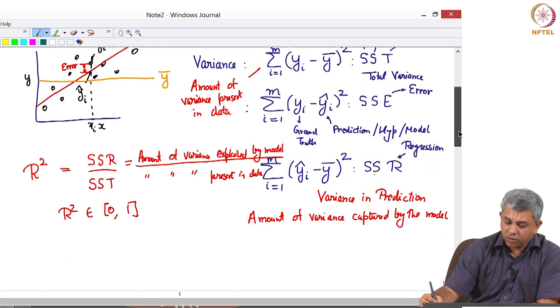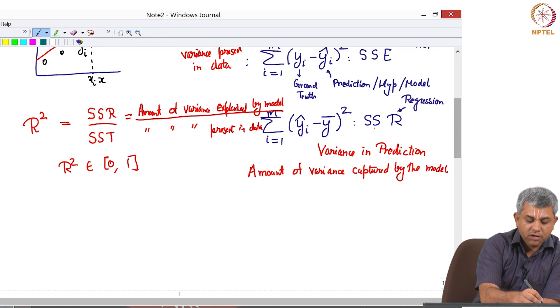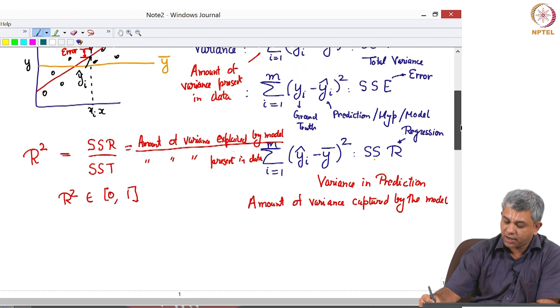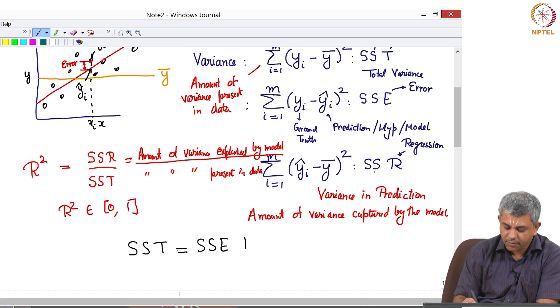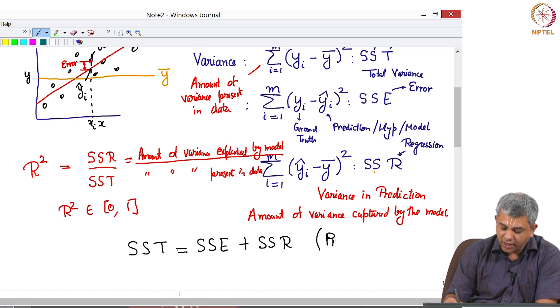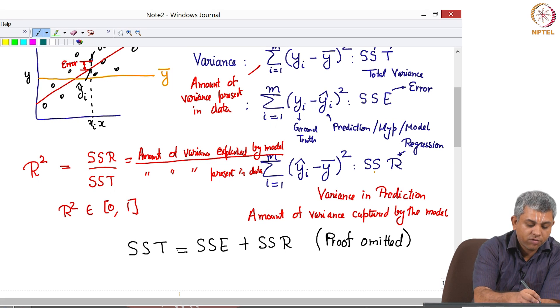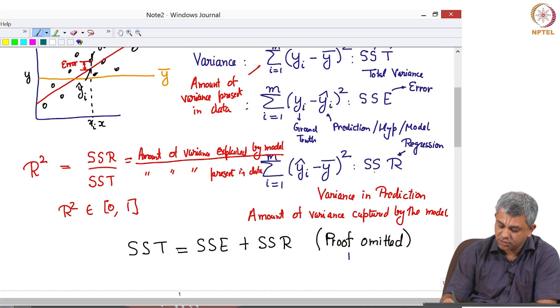Now it turns out that there is a nice relationship between SSR, SSE, and SST. It turns out, and I am going to just say this without proof, SST is equal to SSE plus SSR. You can try the proof as an exercise. It is a slightly tricky proof, I must mention that, in case you wish to try it out for your own edification.